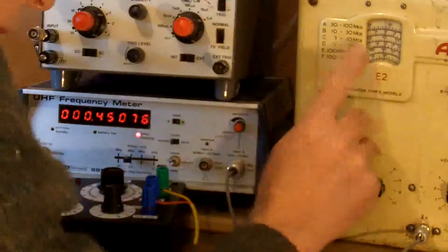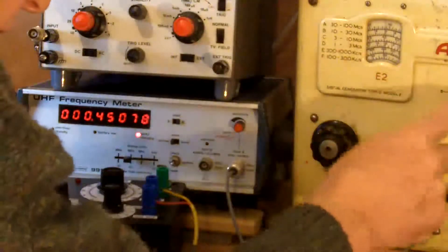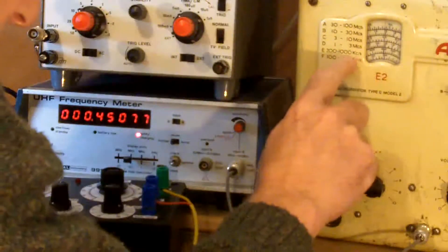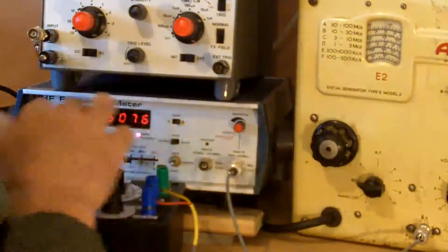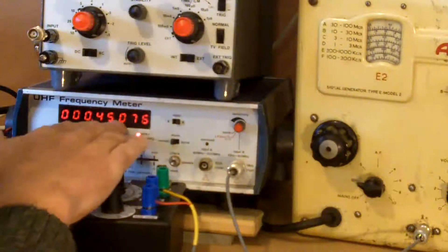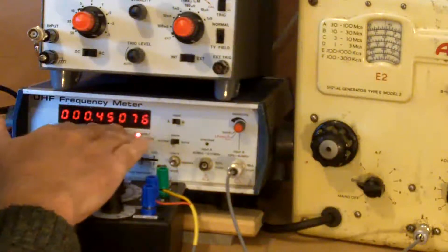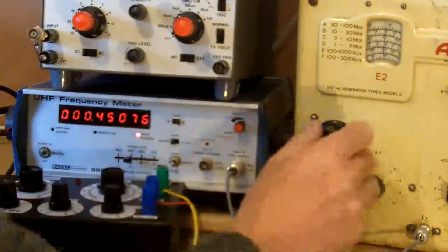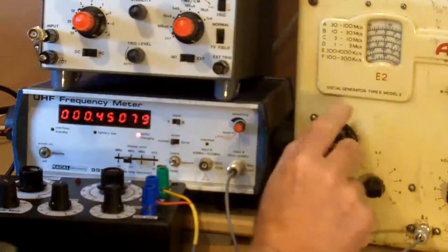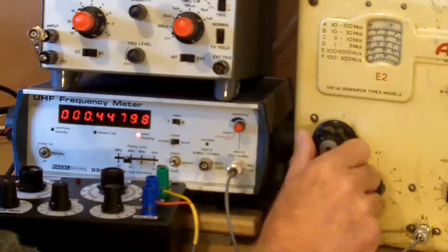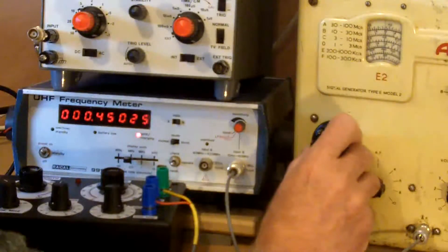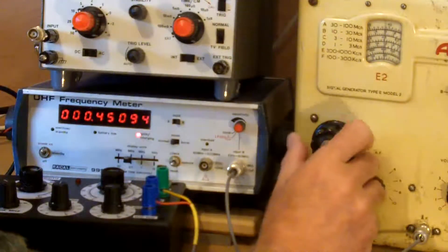I'll show you. I'm on range E, which is 300 to 1000 kilocycles, a higher frequency range. You see there I've got 450 kilohertz, actually 450.75, and the very slightest touch of this dial makes it very difficult to get it to a precise figure.